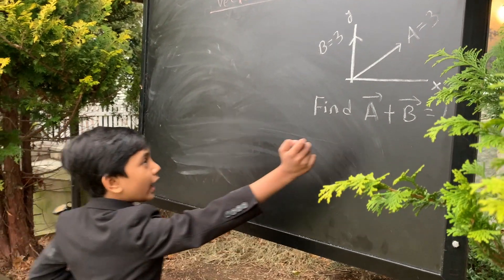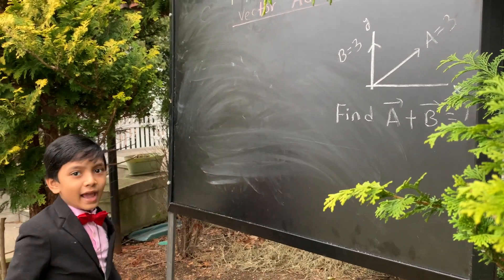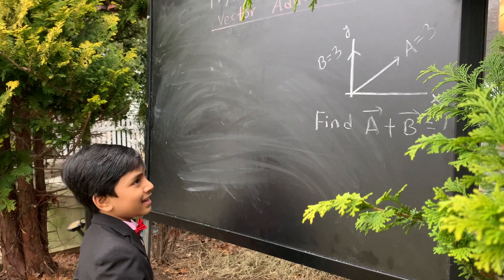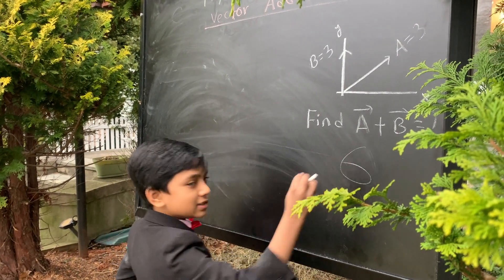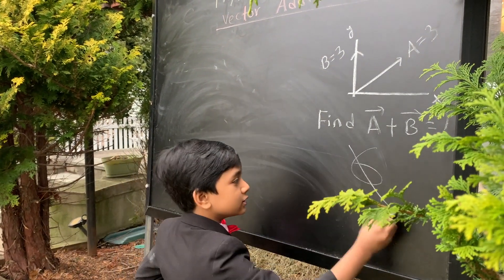Find the vector A plus vector B. Now, it might be tempting to say, hey, A is 3, B is 3, boom, 6. Well, that is not right.